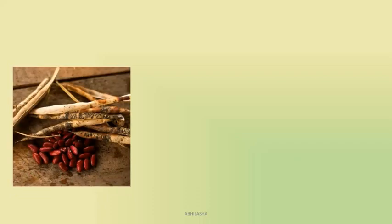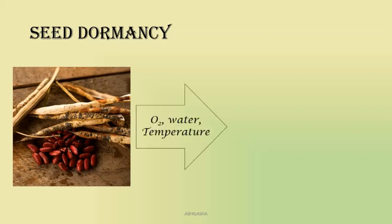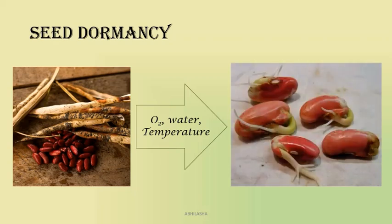As the seed begins to mature, it loses its water until almost 10 to 15 percent of water remains, meaning it becomes very dry. Its metabolic rate reduces and it enters an inactive stage — this is known as seed dormancy. Once favorable conditions return — that is, water, oxygen, and suitable temperature are available — the seed will break its dormancy and begin to germinate.